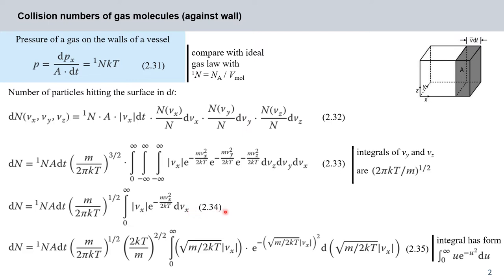We separate all variables and substitute for vx using the expression √(m/2kT) times the modulus of vx. This puts the integral into a standard form: the integral from zero to infinity of u·e^(−u²) du, which has a value of one half.